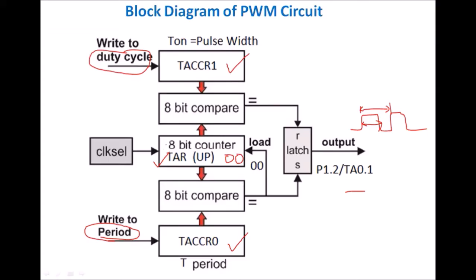Initially the TAR register is initialized with value 0x00. When the timer is started, the TAR count is incremented by 1 and the upper 8-bit comparator compares the count of the TAR register with the count stored in TACCR1. When it matches, a signal is generated and given to the reset terminal of the latch, so the latch resets and the output switches from logic 1 to logic 0. So after this duty cycle value, the output switches from logic 1 to 0.